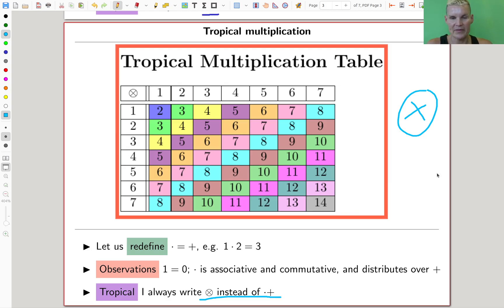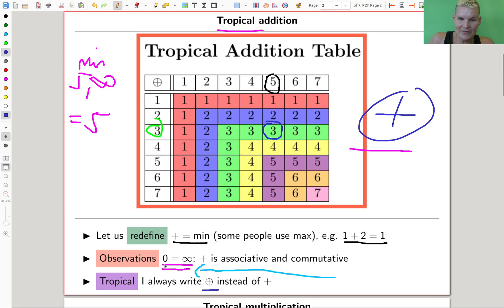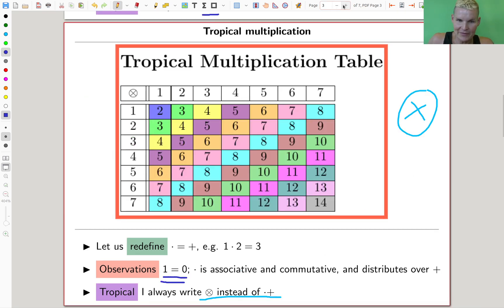And again, not to get confused, I will write this funny times symbol for tropical multiplication. And again, I can write an equation which everyone likes or everyone hates - it depends. But I like it. I can write one equals zero. Wonderful! One equals zero, my favorite equation of all time, just after zero equals infinity.